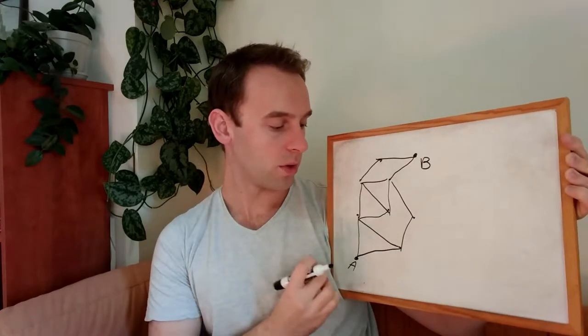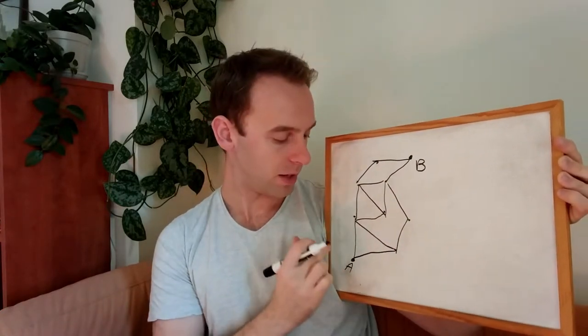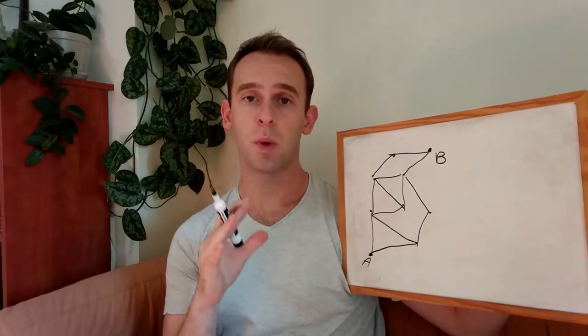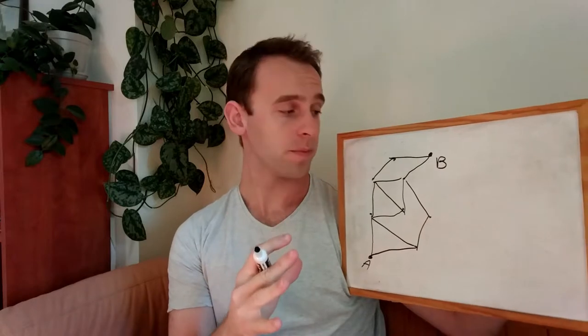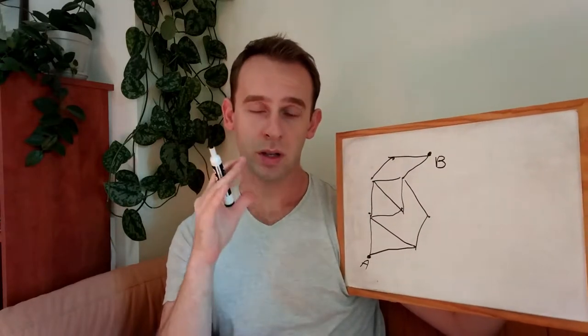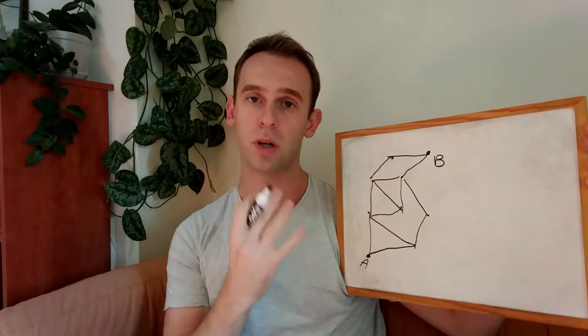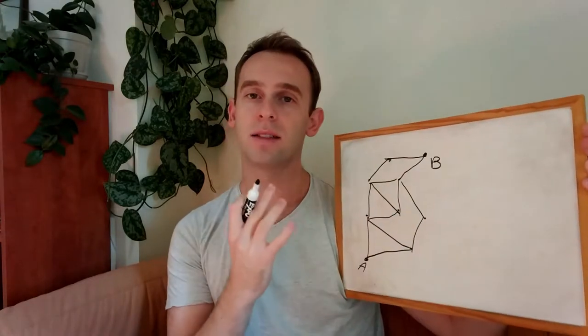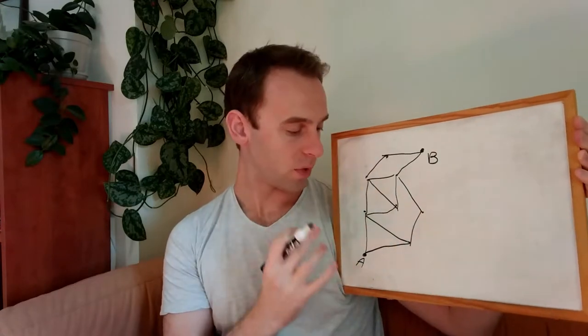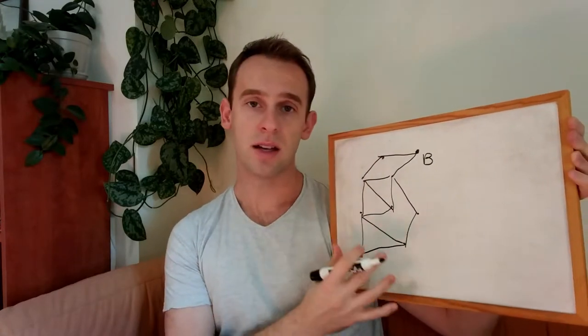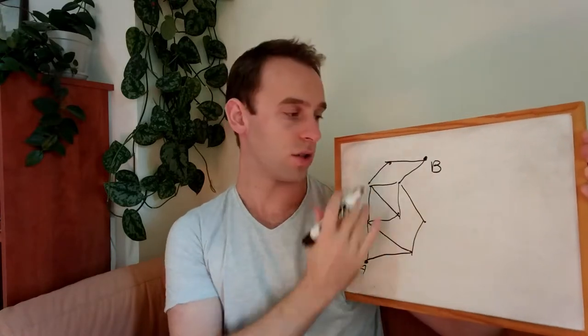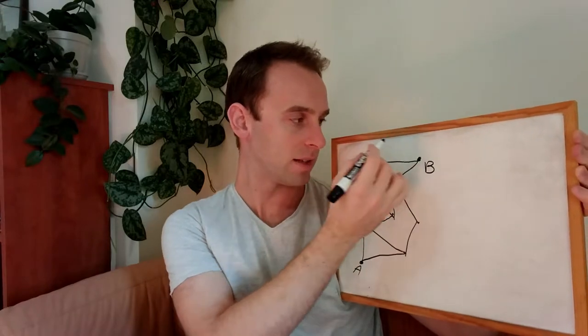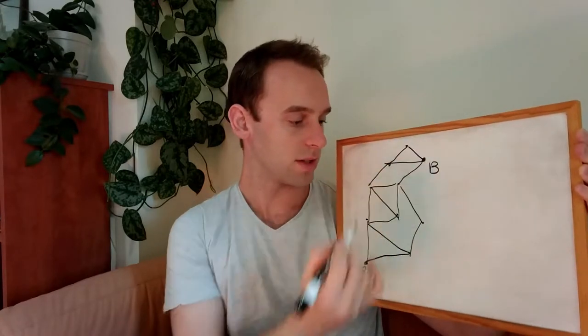So let's see how we can solve this problem of finding the shortest path from A to B. In order to solve this problem, we will actually solve a harder problem, and by solving that problem, we will also solve the problem that we are interested in. So instead of solving the shortest path from A to B, let's solve the problem of finding the shortest path from A to each and every node in our graph.